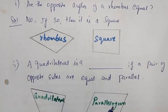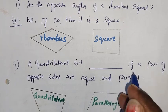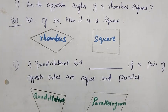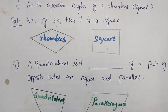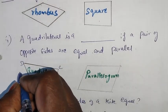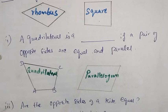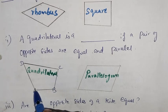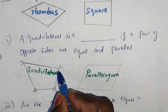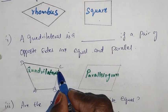Next question: a quadrilateral is a dash if a pair of opposite sides are equal and parallel. In quadrilateral ABCD, both pairs of opposite sides are equal in the quadrilateral.